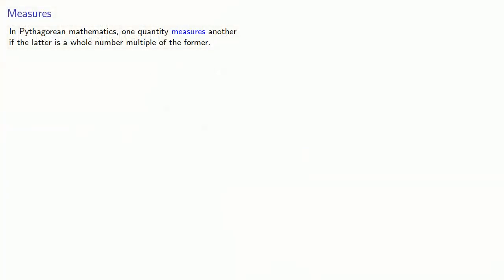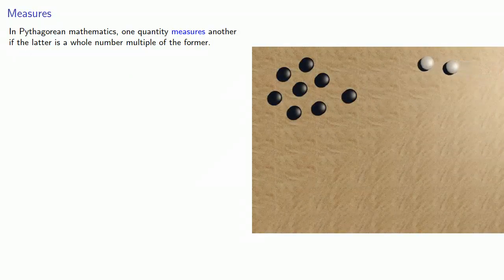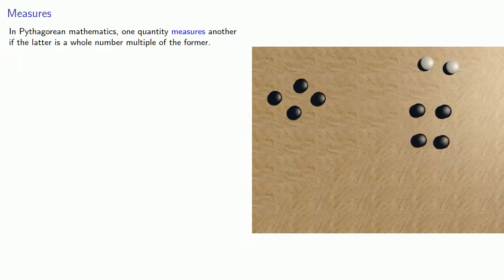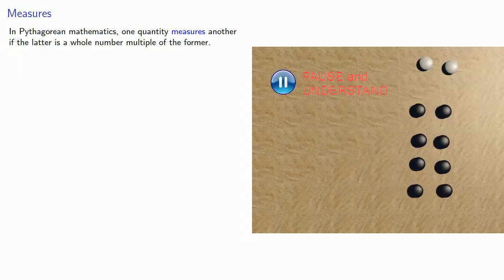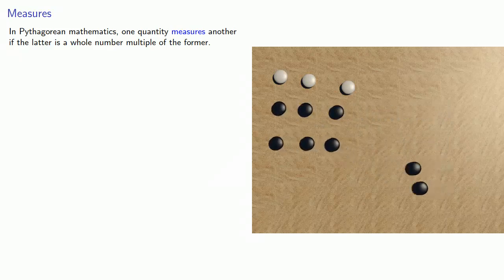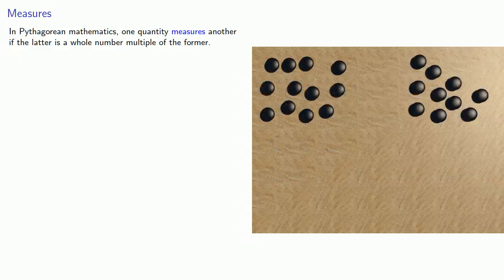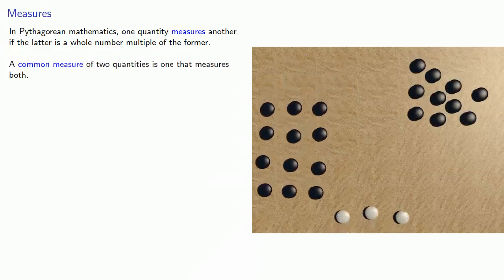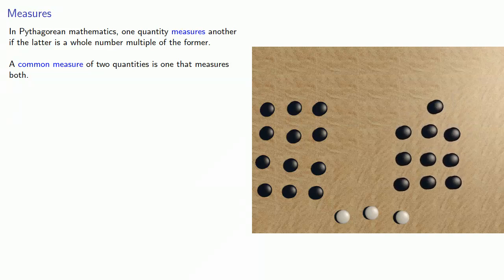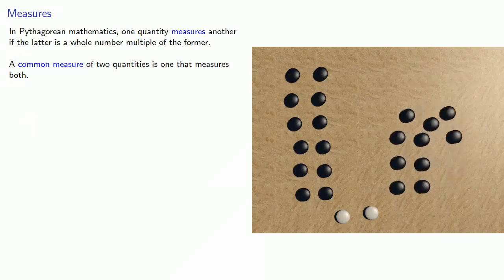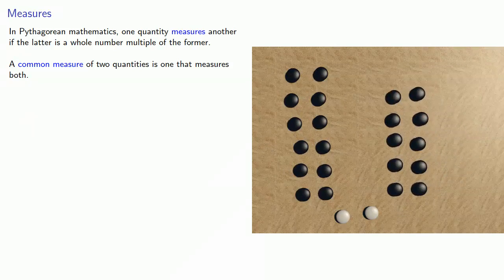In Pythagorean mathematics, one quantity measures another if the latter is a whole number multiple of the former. So here the quantity on the right is a measure of the quantity on the left because the quantity on the left is a multiple of the quantity on the right. But this quantity is not a measure because the quantity is not a multiple. Now if we have two quantities, we might have a common measure — something that measures both. The quantity at the bottom measures both, so it's a common measure.